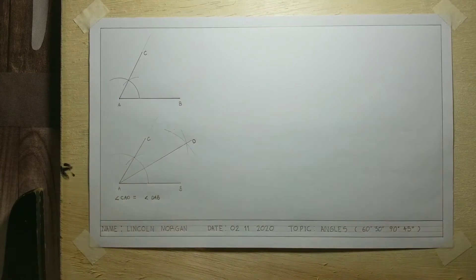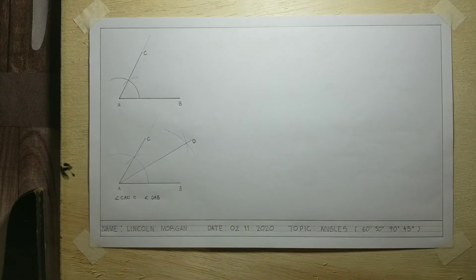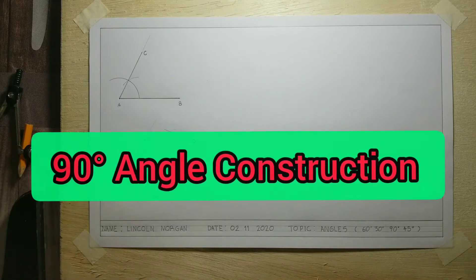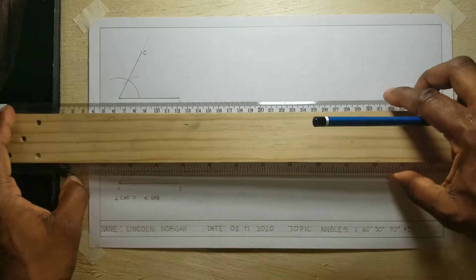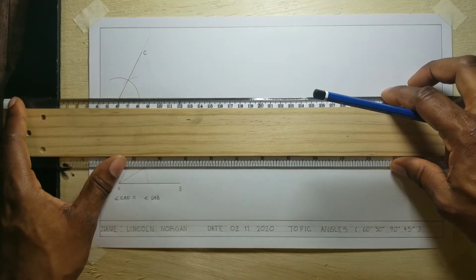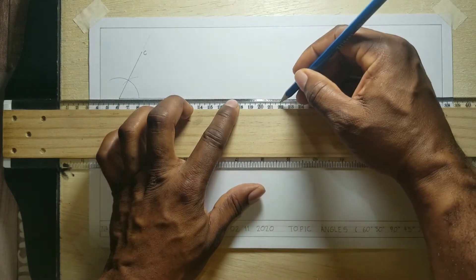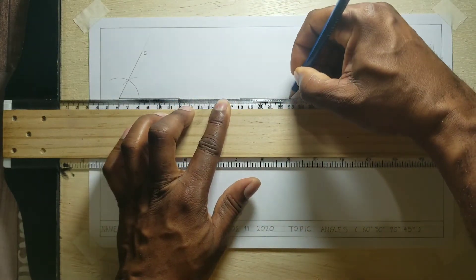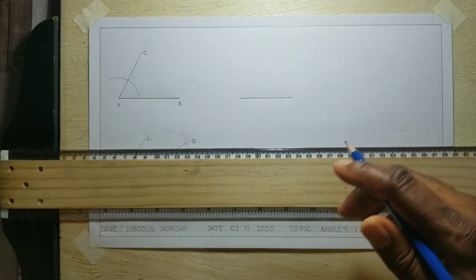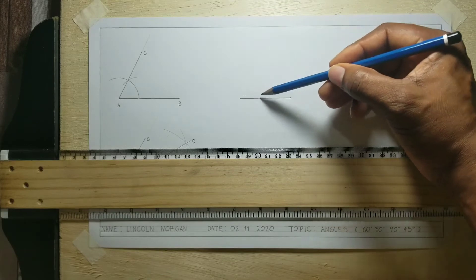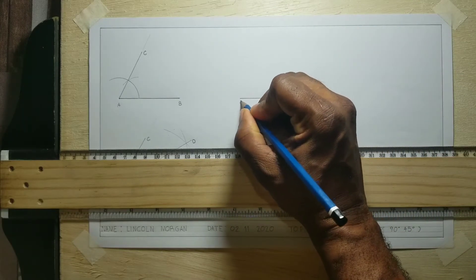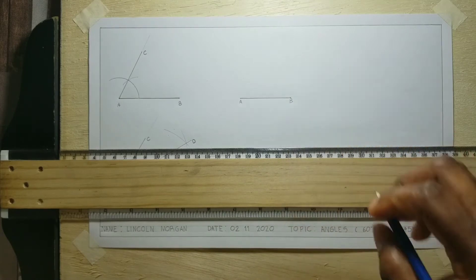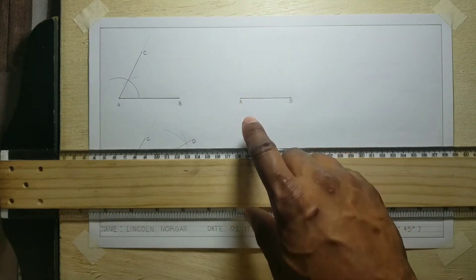I will now be showing you how to construct a 90 degree angle. This first method was used in a previous lesson, so I will not be going too slow. First, our line AB will be 50. If we want to construct a 90 degree angle here, which is perpendicular to line AB, we will need to first extend this line from A.